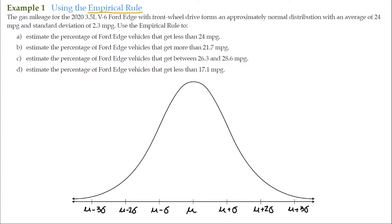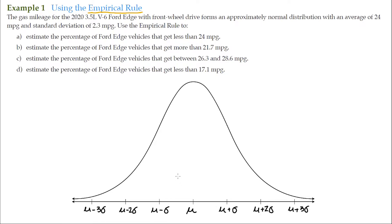The empirical rule states that within one standard deviation from either side of the mean, this area represents approximately 68% of the data. Within two standard deviations from the mean, this represents approximately 95% of the data. Within three standard deviations of the mean, the area under here represents around 99.7% of the data.